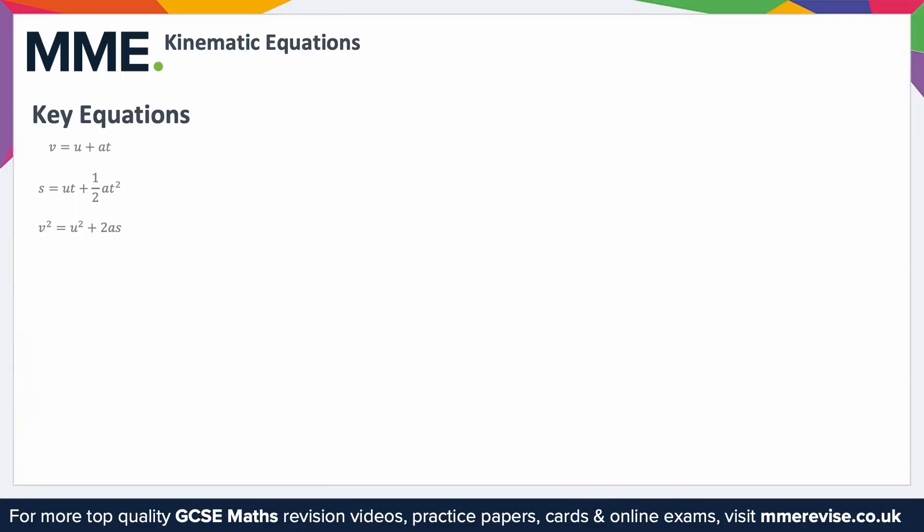The key equations in kinematic equations are the three seen here: V equals u plus at, S equals ut plus half at squared, and V squared equals u squared plus 2as. You might be thinking that's a lot of letters and you don't really know what any of them mean. Well, we can quickly define them.